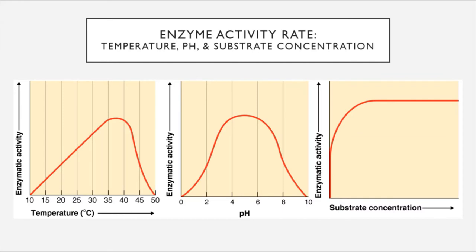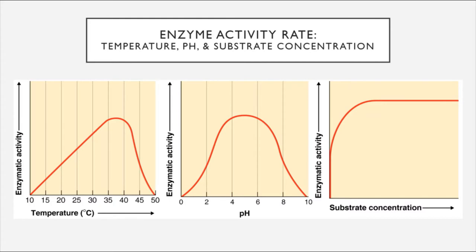A third factor that impacts enzymatic activity rate is the concentration of the substrate—the reactant the enzyme is interacting with. Unlike temperature and pH, which exhibit an optimal peak, substrate concentration will increase enzymatic activity rate up to a certain point, after which it levels off and reaches what's called a saturation point. As you supply more substrate, the enzyme can only work so fast. If you keep supplying the enzyme with larger and larger amounts of sucrose, it will work faster up to a certain point, after which it is completely saturated and just can't move any faster.